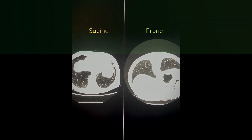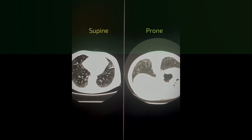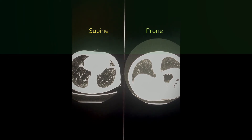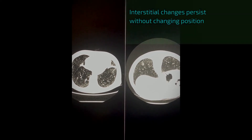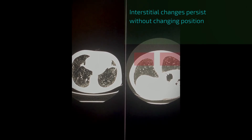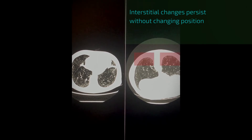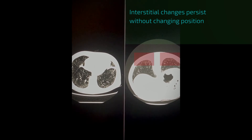We have a supine acquisition and a prone acquisition. In the event of gravity-dependent atelectasis, these changes would drop down to the opposite side of the lung. In this case, they prevail on the non-gravity-dependent posterior basal lungs, which, in combination with the other features, is more confirmatory of an interstitial lung abnormality rather than gravity-dependent atelectasis.